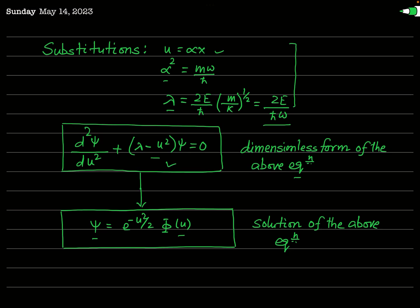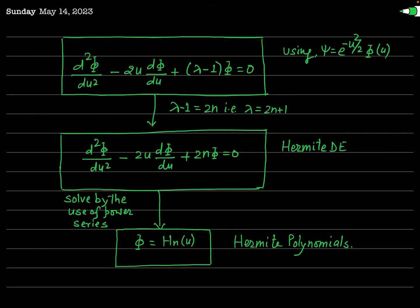Taking ψ = e^(−u²/2) · φ(u) and substituting into the dimensionless equation, after carrying out the algebra one finds: d²φ/du² − 2u(dφ/du) + (λ − 1)φ = 0. If the constant (λ − 1) is replaced by 2n, where n is an integer (n = 0, 1, 2, 3, …), then this equation becomes a standard equation of mathematical physics called the Hermite differential equation.